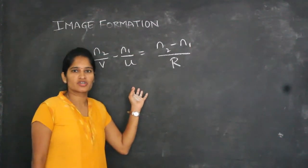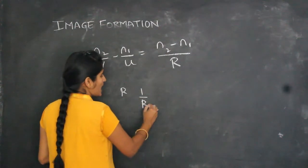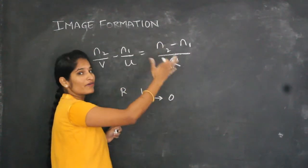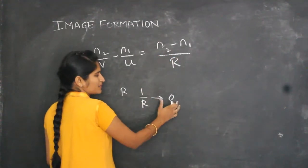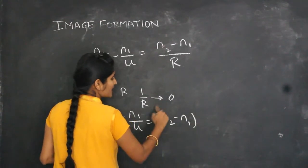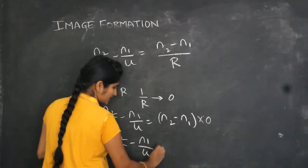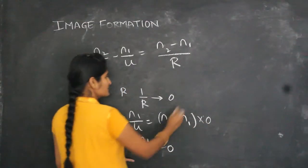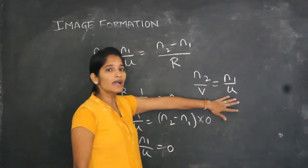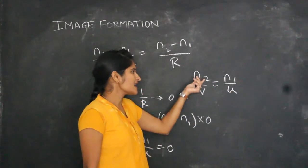This relation can also be generalized for a plane surface. For a plane surface, the radius of curvature is infinite, so 1/R equals 0. Substituting into the equation, the right-hand side becomes zero, giving N2/V minus N1/U equals 0, or N2/V equals N1/U. This is the relation for refraction at plane surfaces, relating object distance, image distance, and the refractive indices.